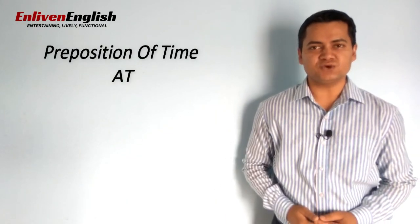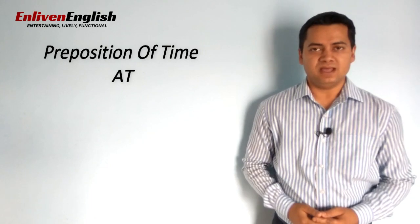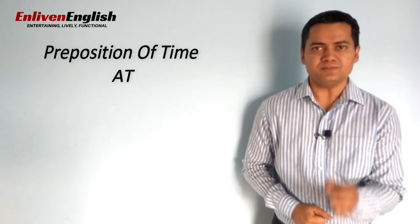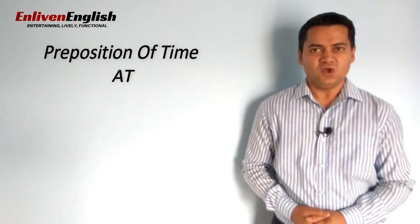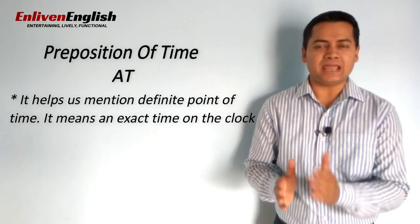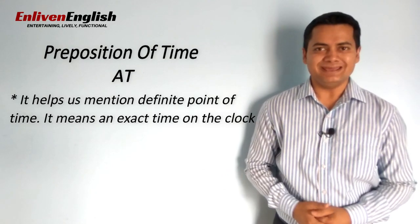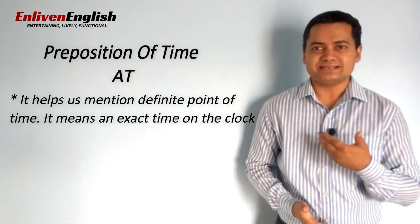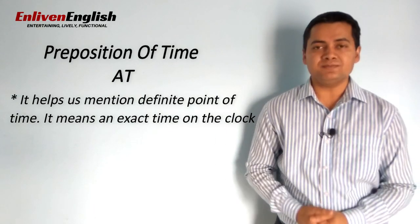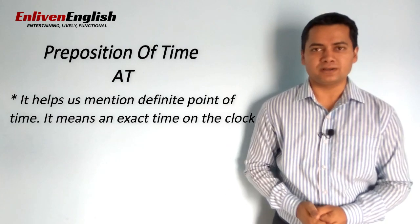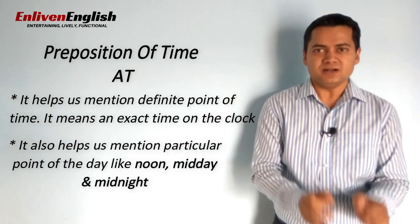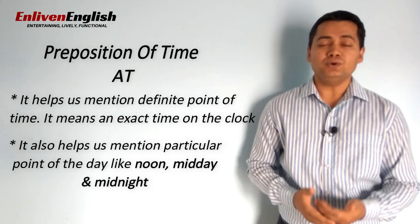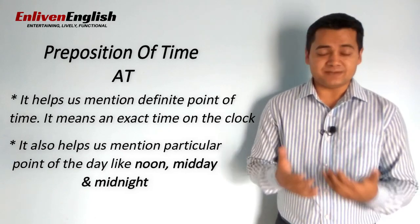Let's start our discussion with preposition 'at.' At, as a preposition of time, means a definite or particular point of time of the day. When we say a definite point of time, it means the exact time on the clock, such as at 7 a.m., at 5 p.m., at 10 o'clock. And when we say a particular point of time, it means at noon, at midday, and at midnight.